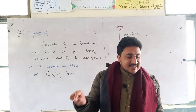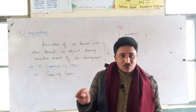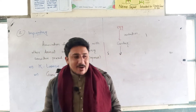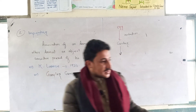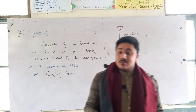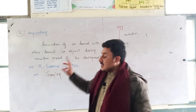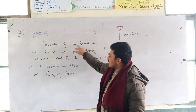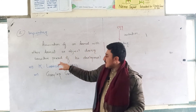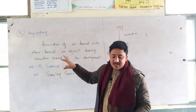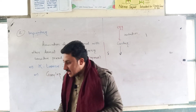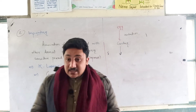This gosling followed Lorenz instead of its mother. From this, Lorenz came to know that young ones make an association with an object or other animal during the sensitive period of their development, and this association is called imprinting.